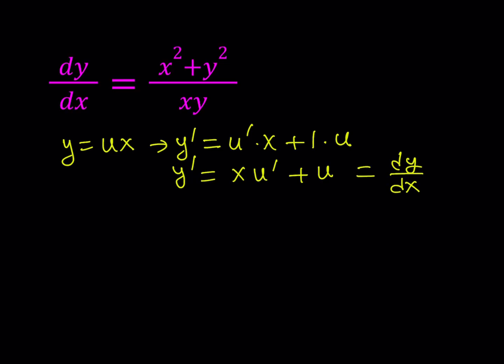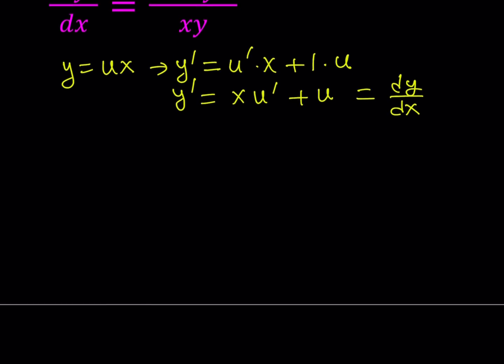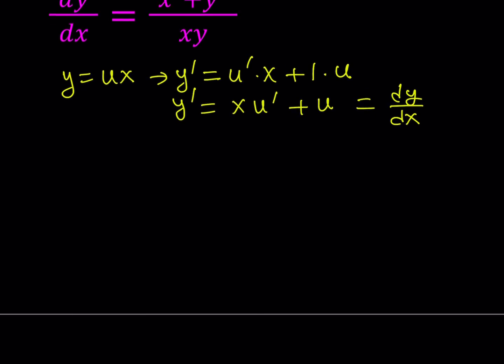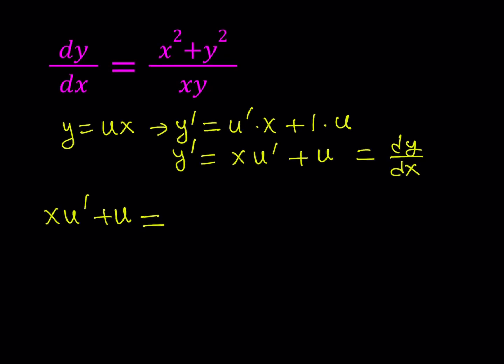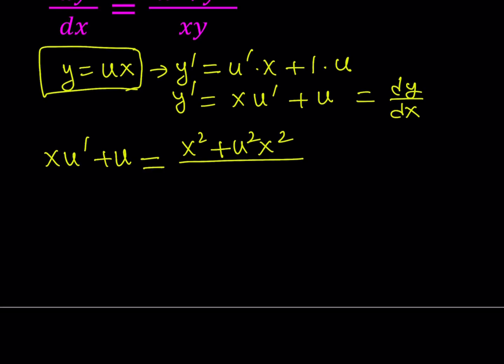Now let's go ahead and see what happens on the right hand side when we do the replacement. So left hand side I have xu' + u. And on the right hand side I have this expression, this ratio. x² is just going to stay as is and I'm going to replace y with ux. Therefore, when I square both sides it's going to become u²x².